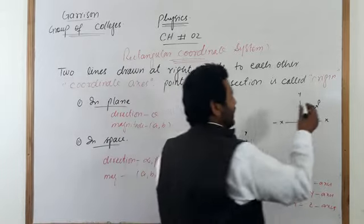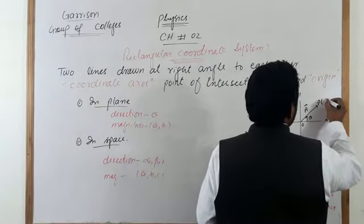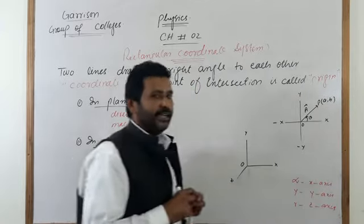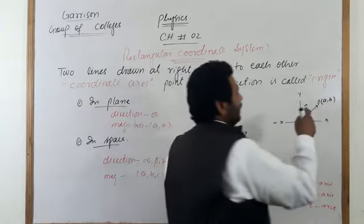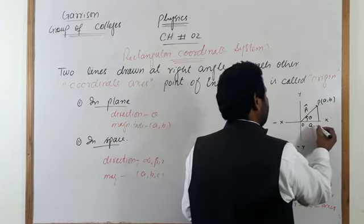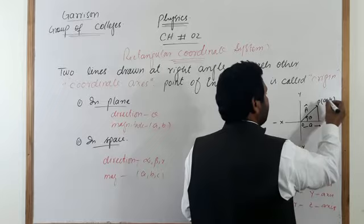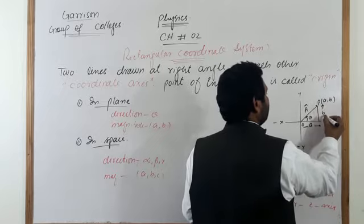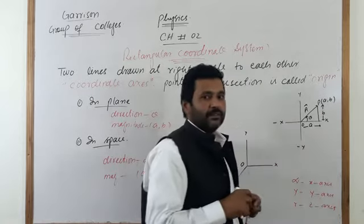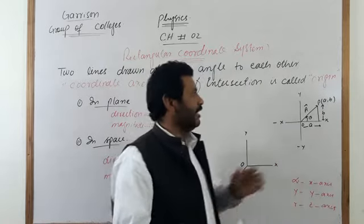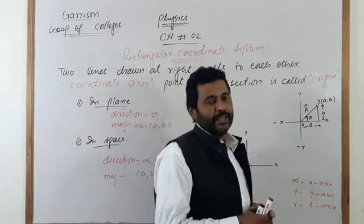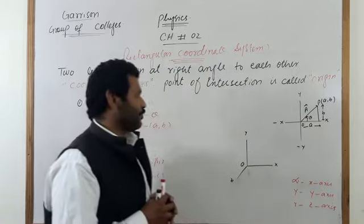In this case, the point P of vector A has coordinates (a, b). The coordinate a is the magnitude of this vector along the x-axis, and b is the distance of point P from the origin along the y-axis. So a and b are the magnitudes of vector A along the respective axes.